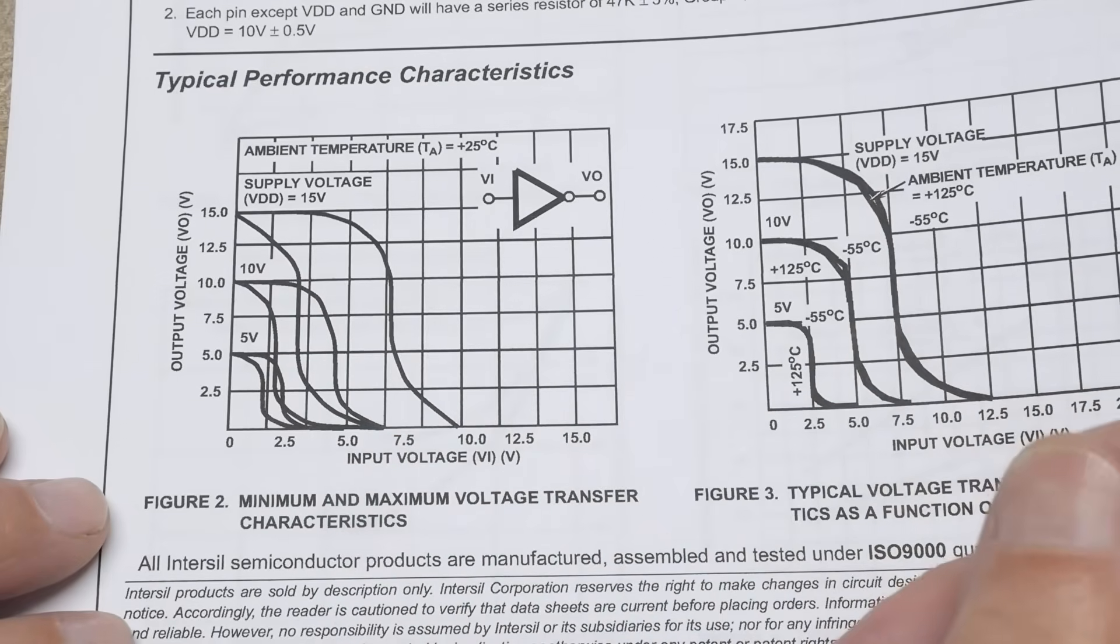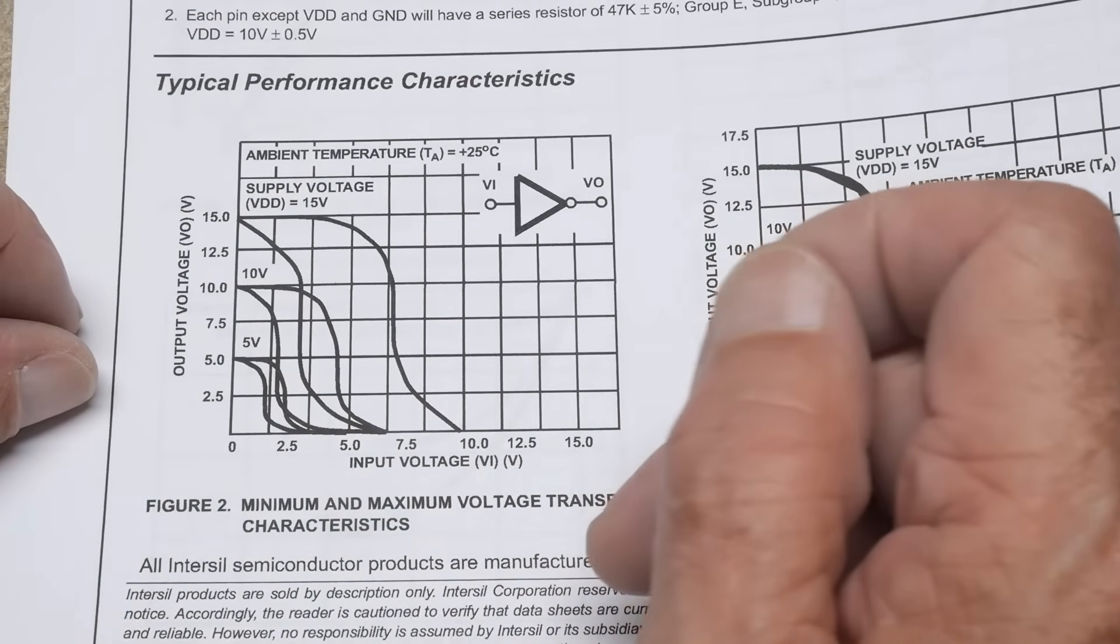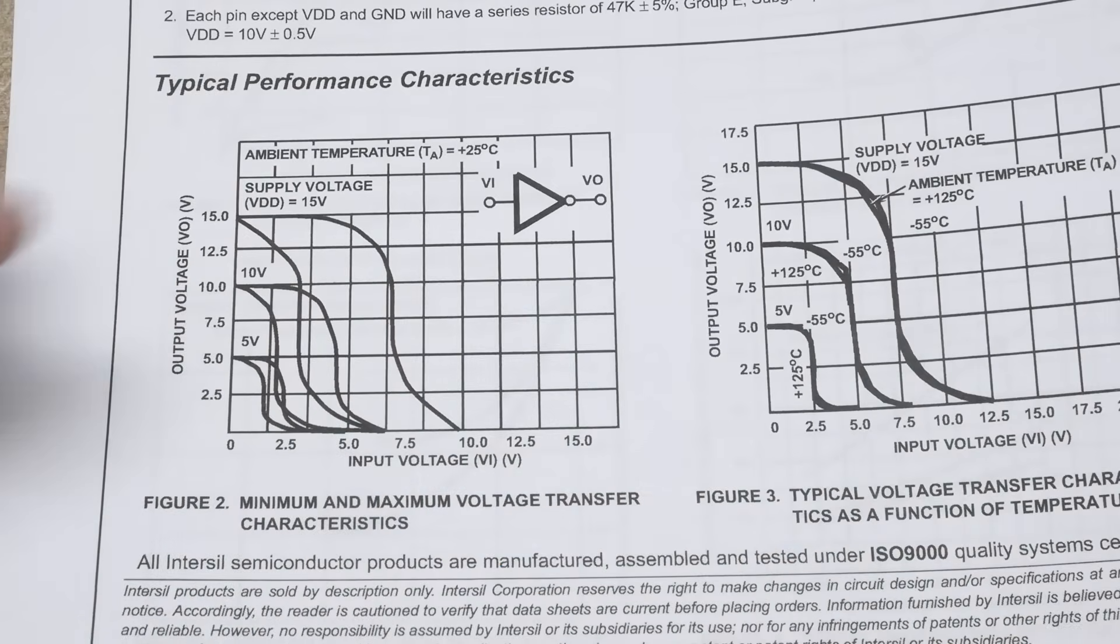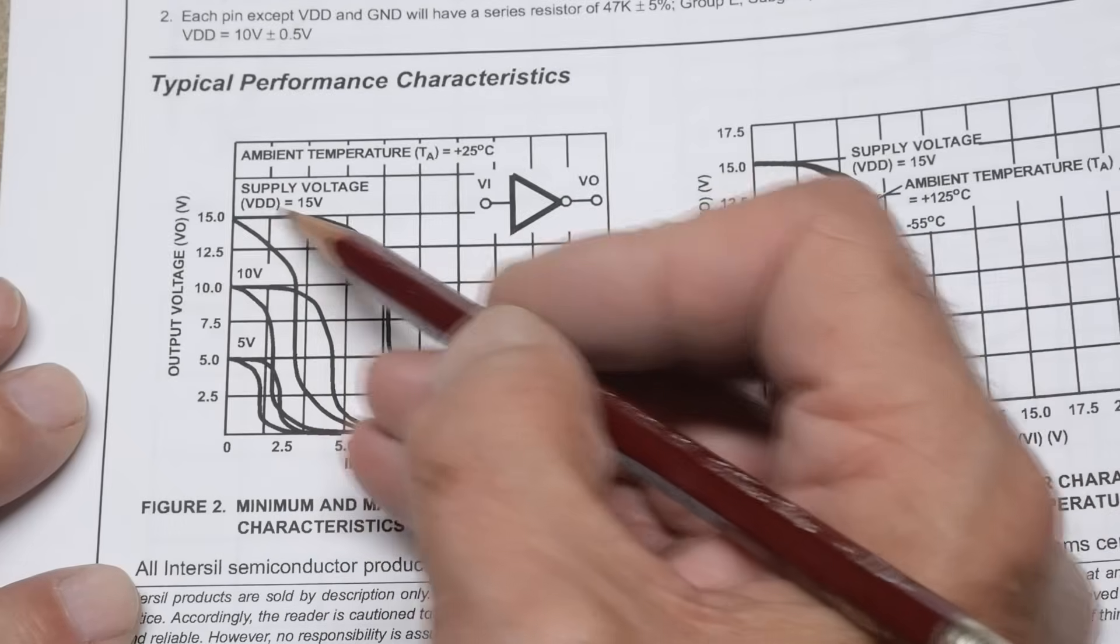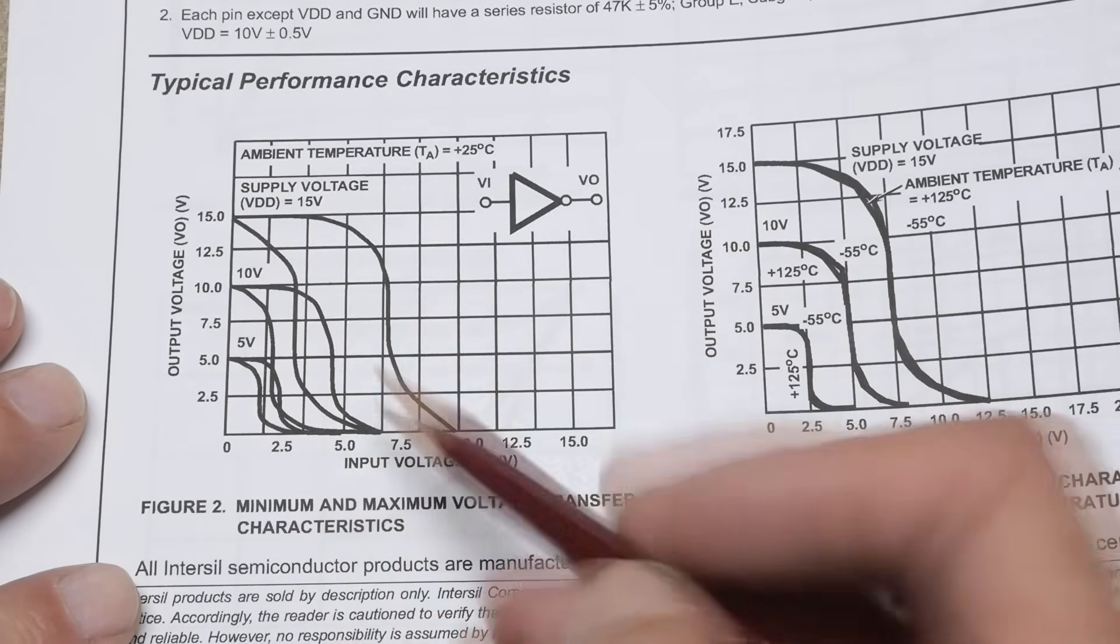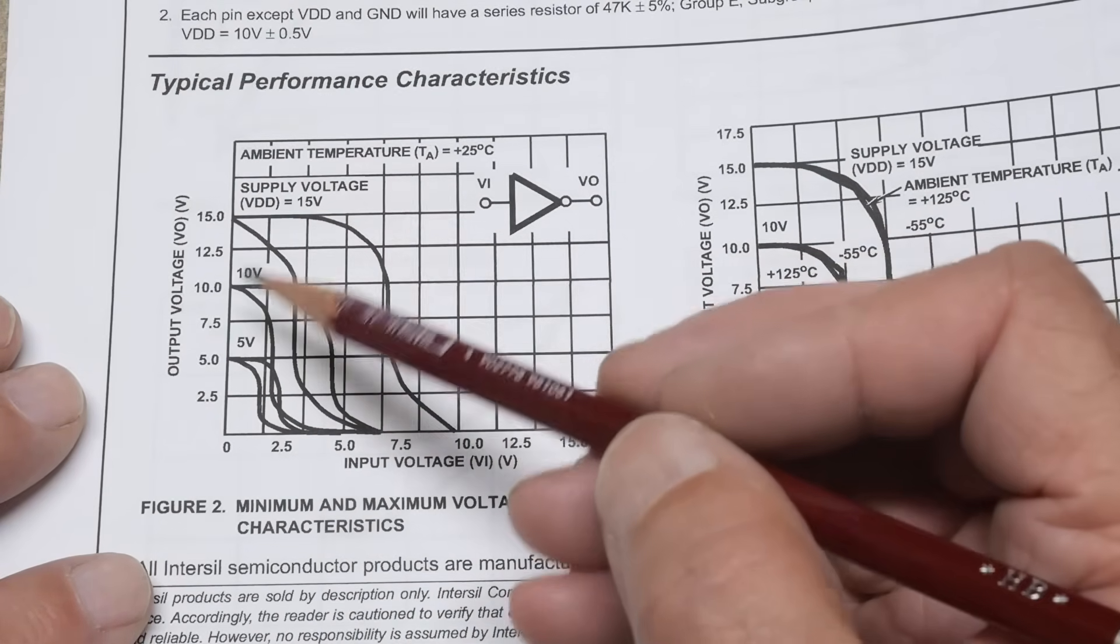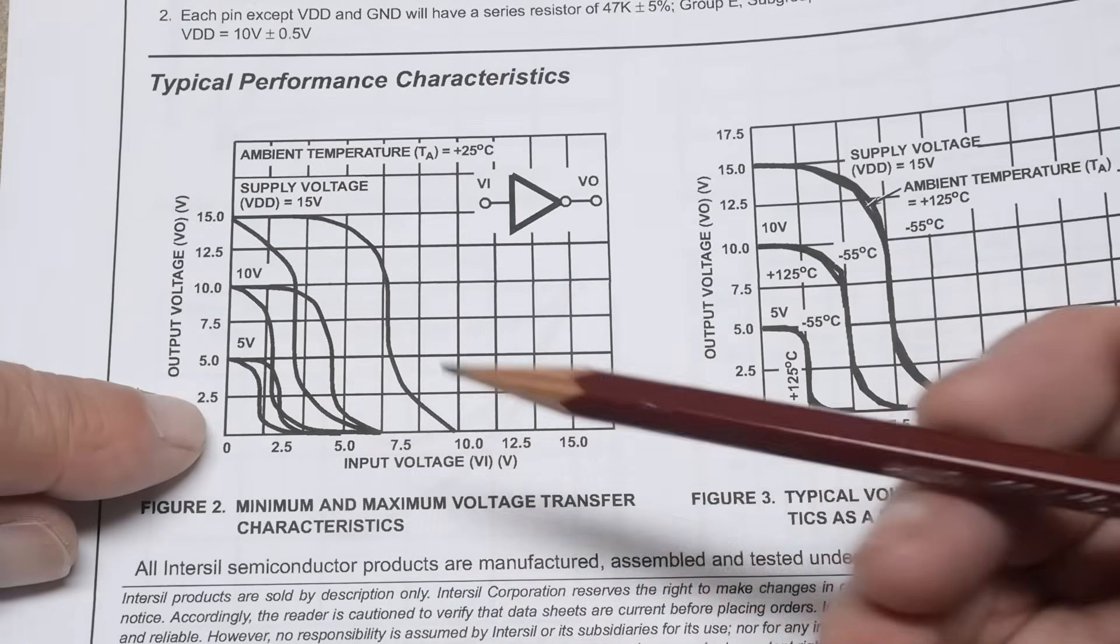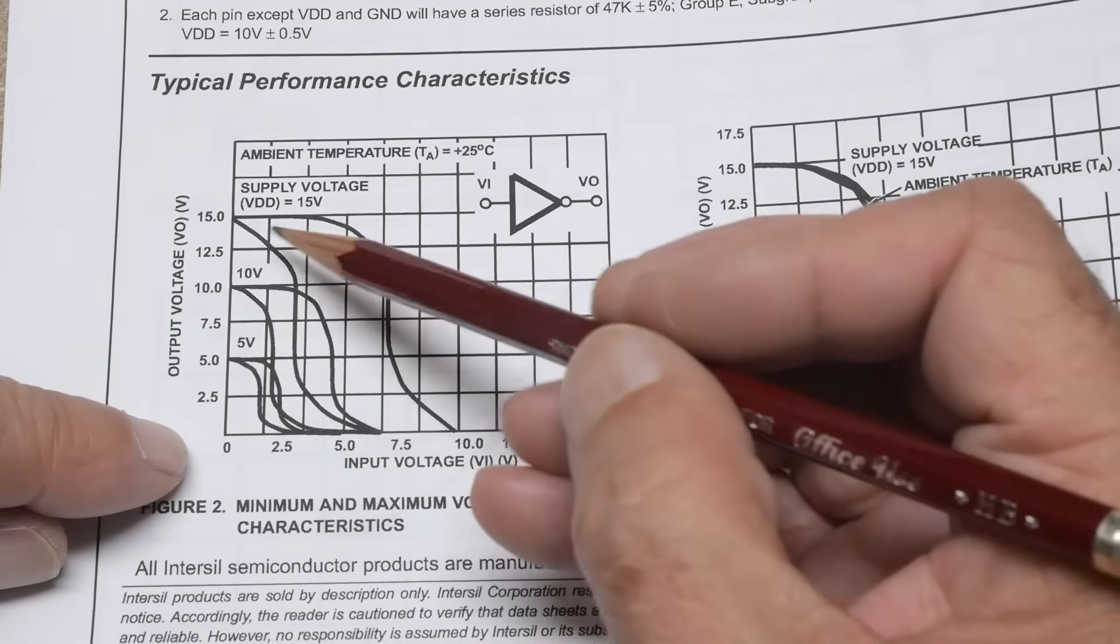So let's take a look at this picture right here. So what is this picture? It looks complicated. So supply voltage 15 volts. And then it says 10 volts and 5 volts. So this is the 15-volt curve, this is the 10-volt curve, and this is the 5-volt curve. And so what are we graphing? Well, we're graphing input voltage versus output voltage. And so you can see that there are two lines.